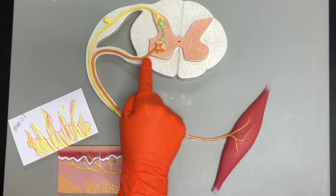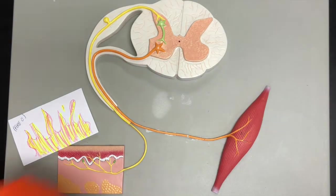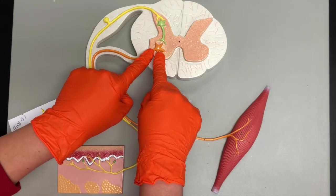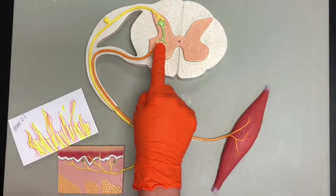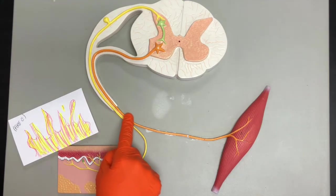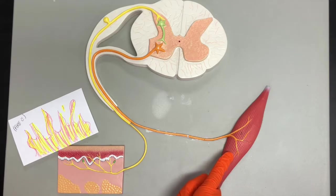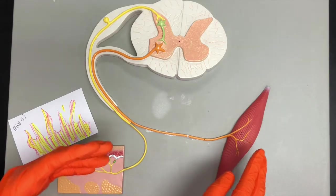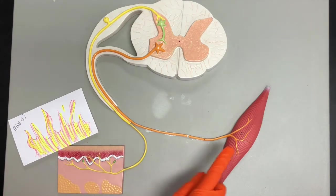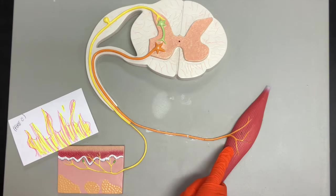So this motor neuron or efferent or e-ferent neuron is going to take that signal away from the central nervous system and then it will attach to either a muscle or gland. In the example where we're talking about a withdrawal reflex, it will attach to the effector which would be a muscle.